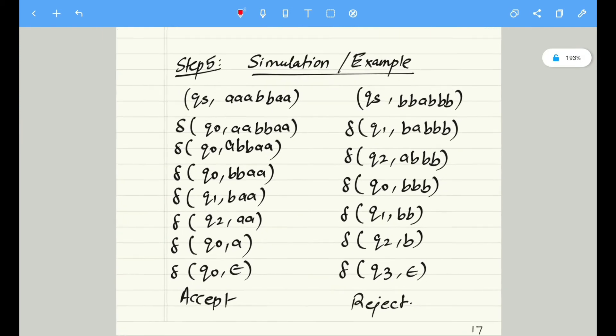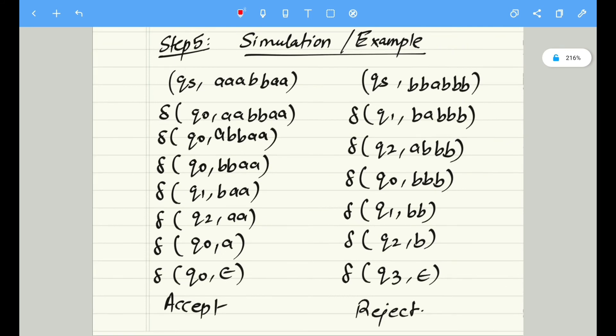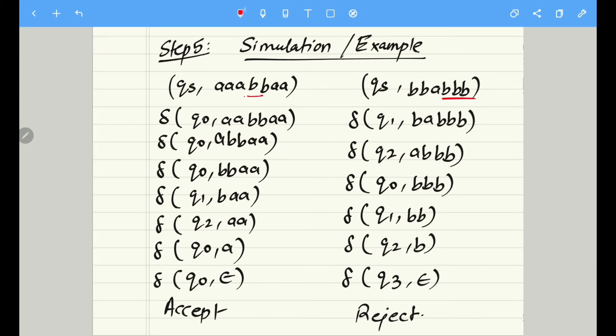So I've taken two examples to illustrate this. First of all, I have taken an example where there is no occurrence of three consecutive b's. But in the second case, there is an occurrence of three consecutive b's. So as a result, we can see that in the first case, on the left-hand side, the string enters into q0 after reading all the inputs.